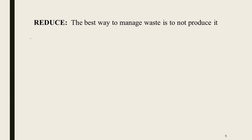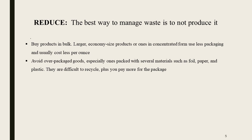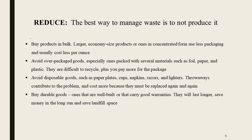First, reduce. The best way to manage waste is not to produce it. Buy larger, economy-sized products or products in concentrated form — they use less packaging and usually cost less per ounce. Avoid over-packaged goods, especially those packaged with several materials such as foil, paper, and plastic, as they are difficult to recycle and cost more. Avoid disposable goods such as paper plates, cups, napkins, razors, and lighters, because they contribute to the problem and cost more since they must be replaced again and again.